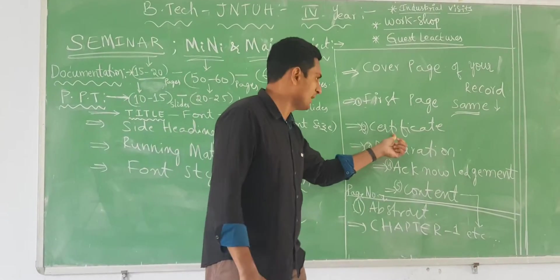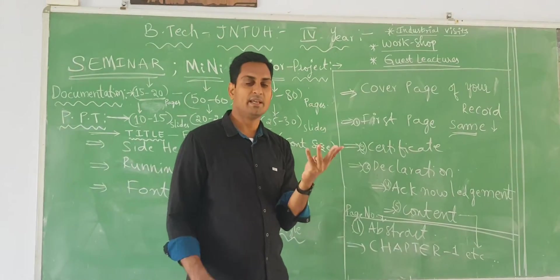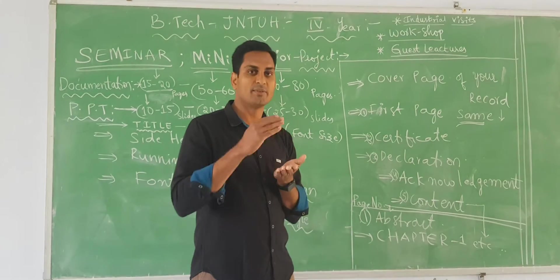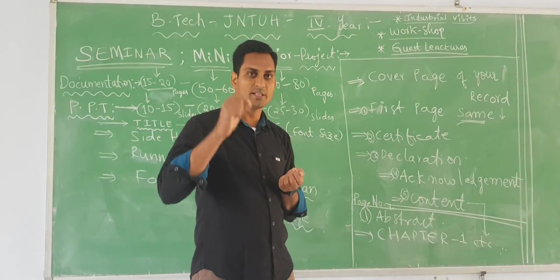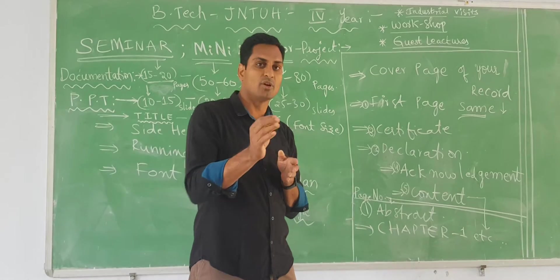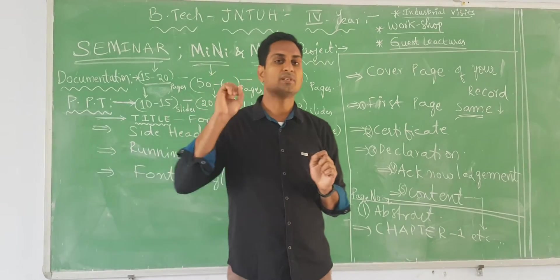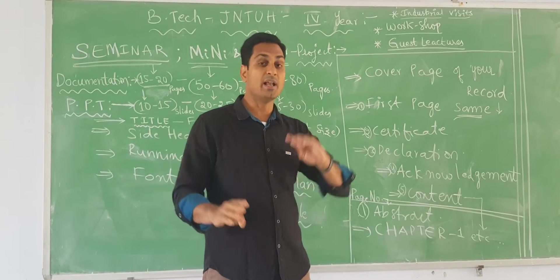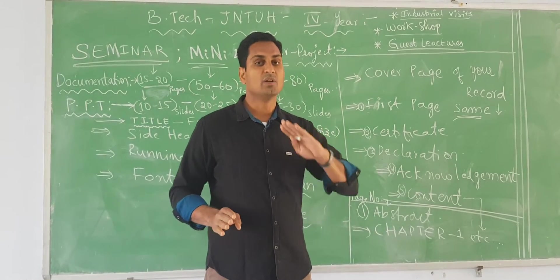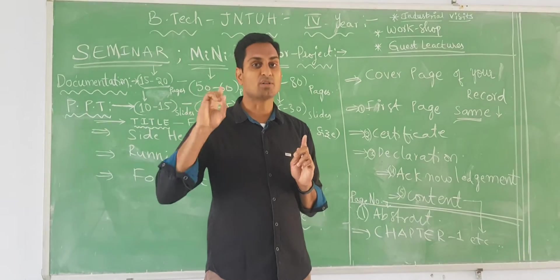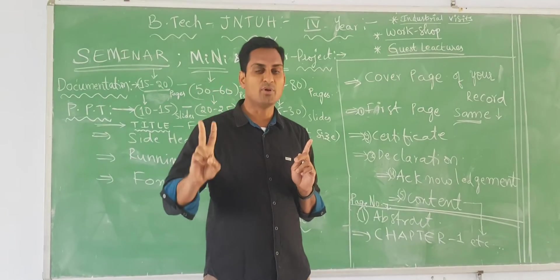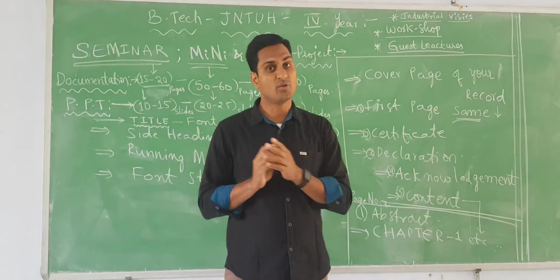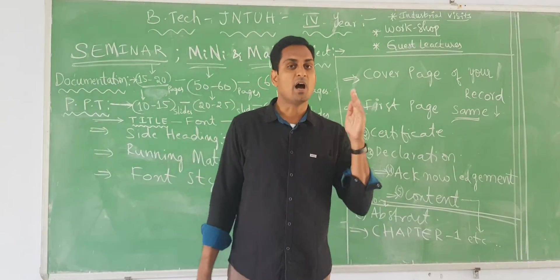Generally the content will be title, abstract, feasibility whether we can do the project or not, business requirement specification, software requirement specification. For the CSE background people, software means which language you are using, which operating system you are using, which database you are using. And hardware requirement specification: which processor you are using, which RAM you are using, and how much hard disk is required for your project.